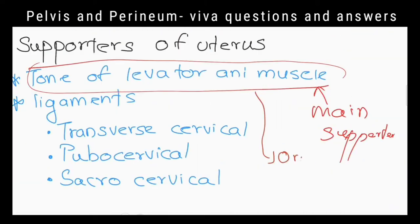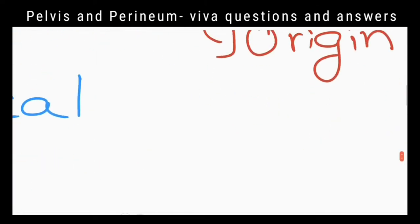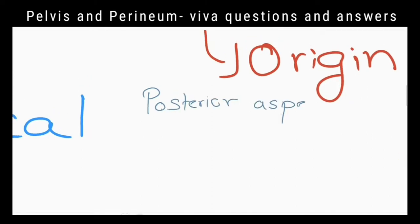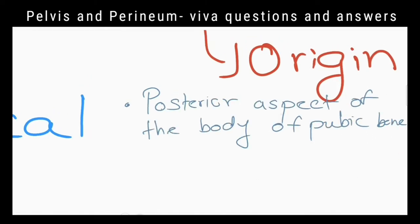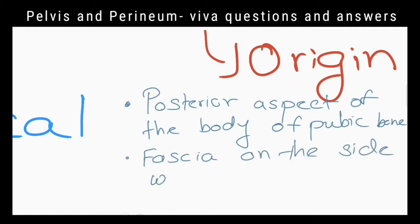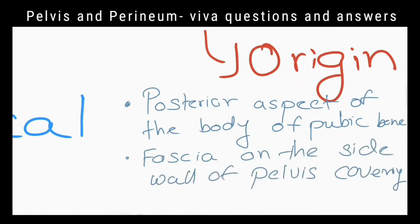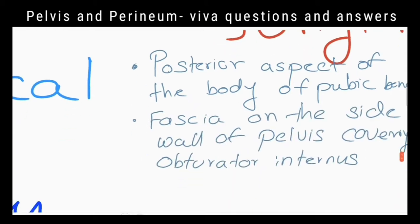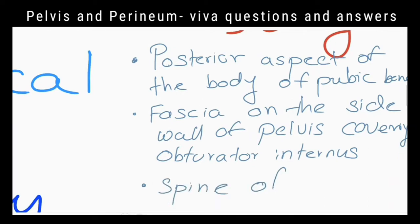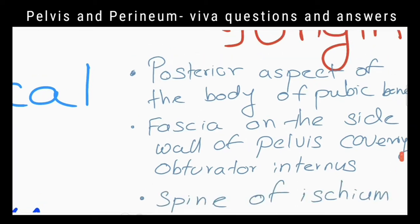What is the origin of the levator ani? It originates from the posterior aspect of the body of the pubic bone, the fascia on the side wall of the pelvis covering the obturator internus muscle, and the spine of the ischium.